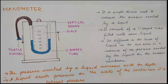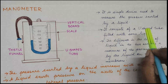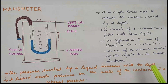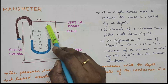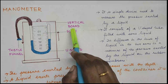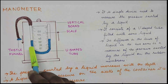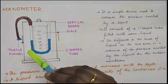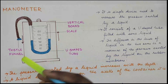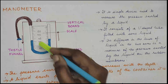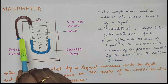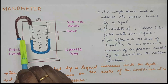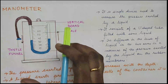Moving on to how to measure pressure in a liquid — I have made a sample of a manometer. A manometer is a simple device used to measure liquid pressure. It has a tube that is open at one end and fixed on a vertical board with scale markings. It is a U-shaped tube containing a liquid such as water or mercury, and is attached with a thistle funnel.